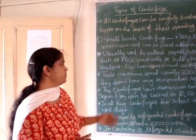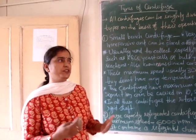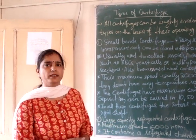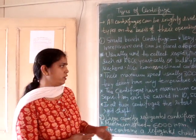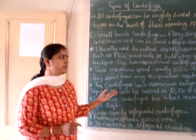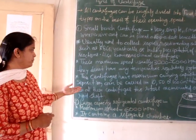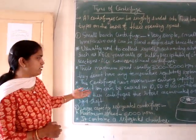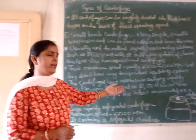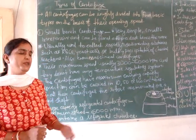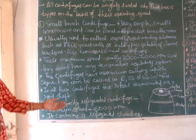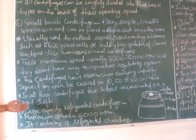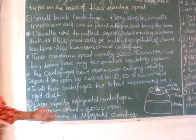They are used to collect E-cells or bulky precipitates of chemical reactions, and are also known as clinical centrifuges. Their maximum speed usually ranges between 3,000 to 6,000 RPM and they do not have any temperature regulation system, which means they work at room temperature. Separation can be carried out in 10, 50, or 100 cubic centimeter tubes.